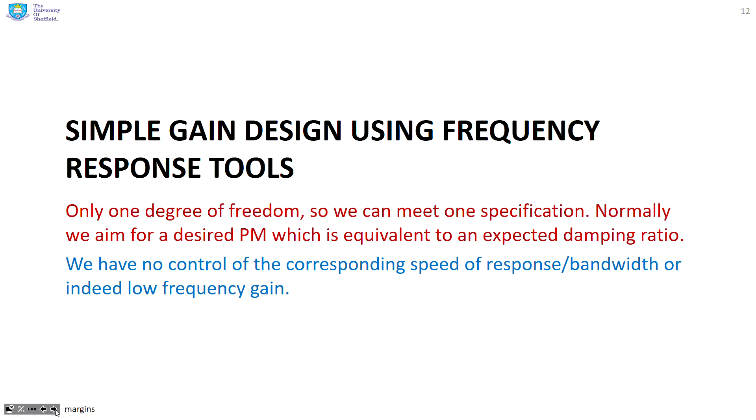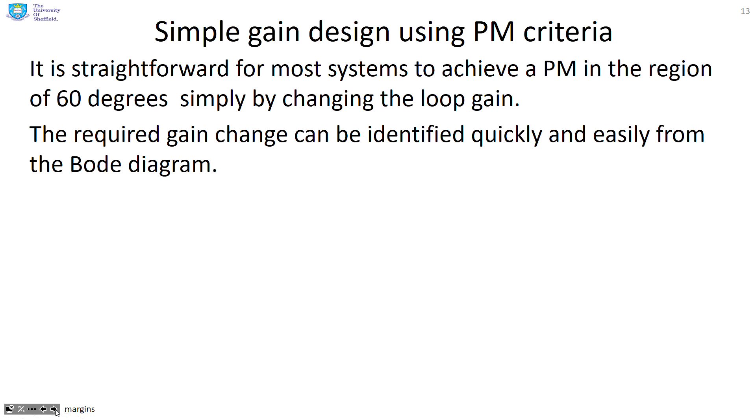Simple gain design using frequency response tools. We've only got one degree of freedom with a simple gain design. That is the gain. So we can only meet one specification. Normally what people do is they say, if I've only got gain to play with, I'm going to try and get a desired phase margin. One criteria which you will try and meet. There is a link between phase margin and damping ratio, and that's where this 60 degrees comes from. If you are roughly 60 degrees, then you expect your damping ratio to be a good one. But you'll notice you now have no control over the corresponding speed of response, bandwidth, or low frequency gain. You're only controlling one criteria.